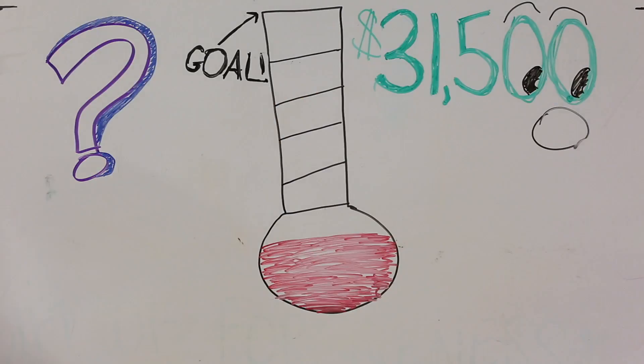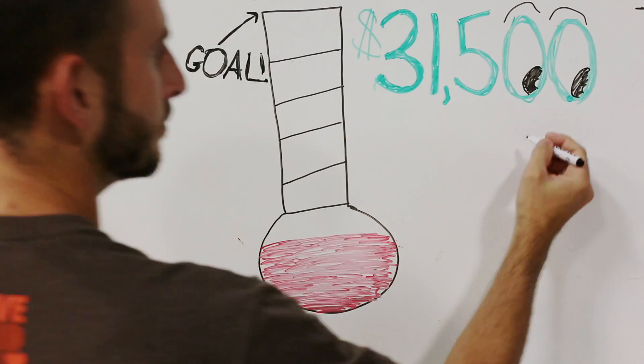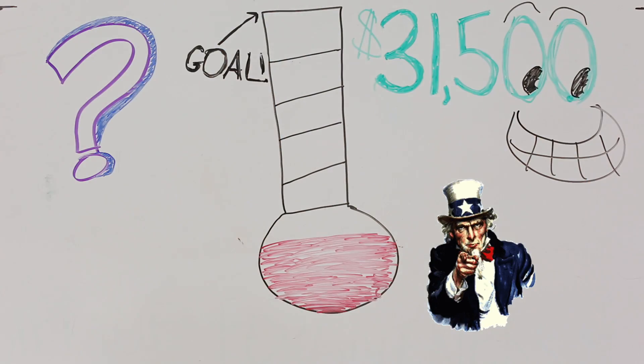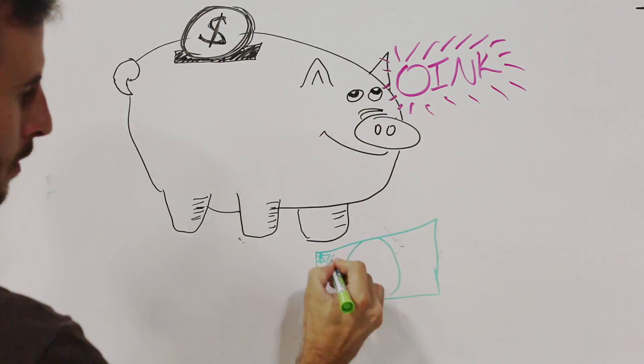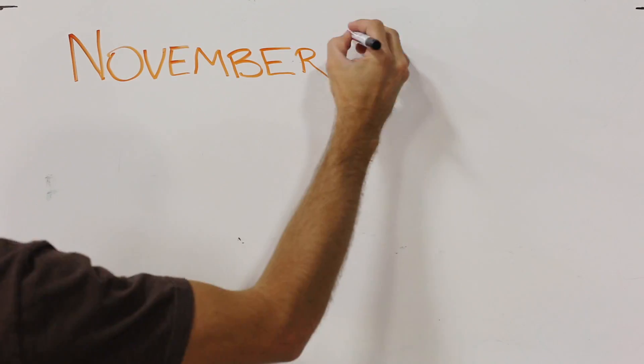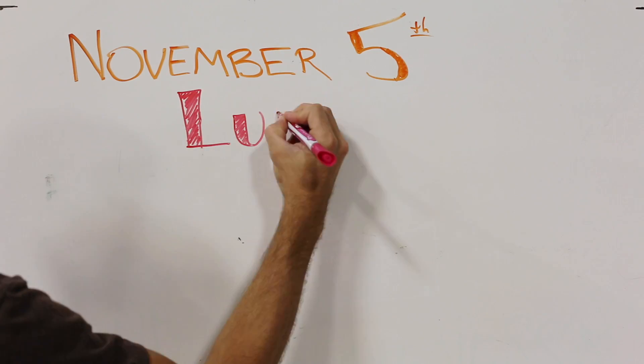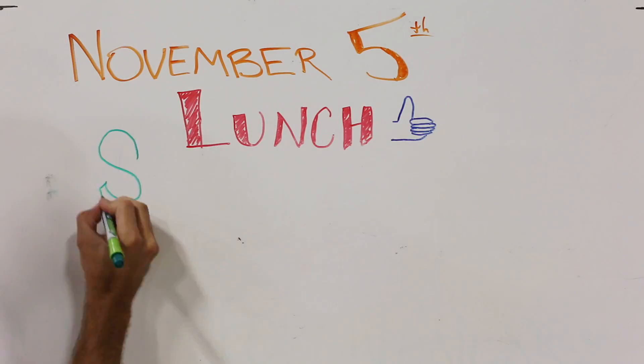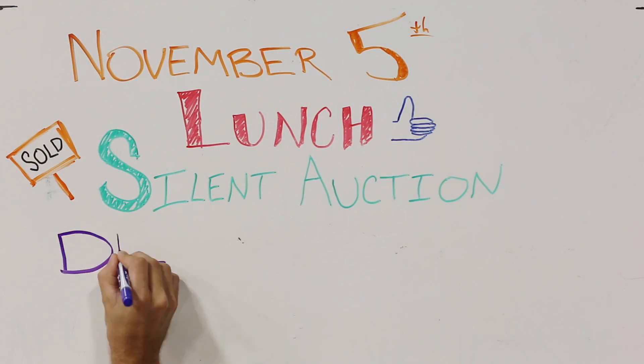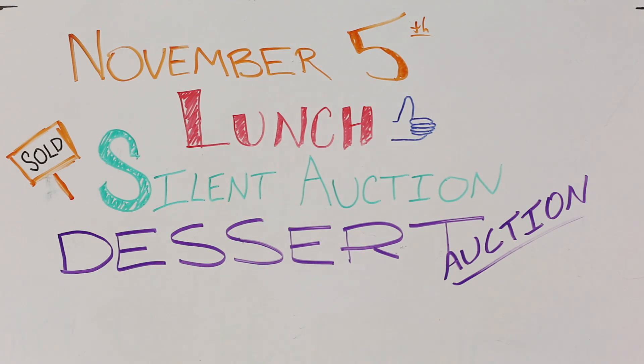and we can't do it ourselves, but God can and you can help. So start saving your pennies. On November 5th, right after the morning service, we're having a lunch, a silent auction, and a live dessert auction.